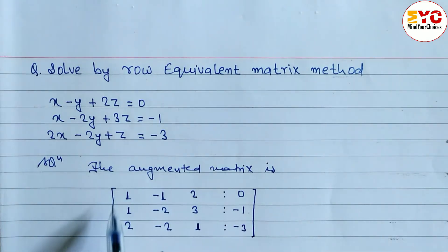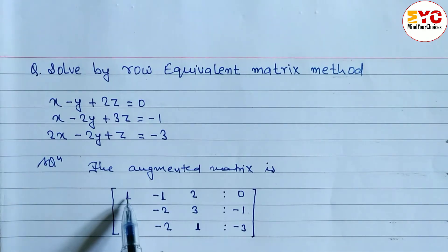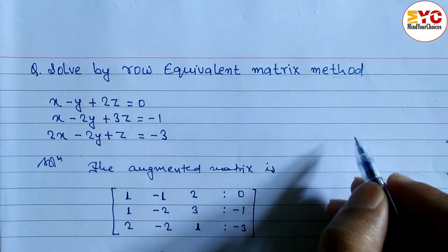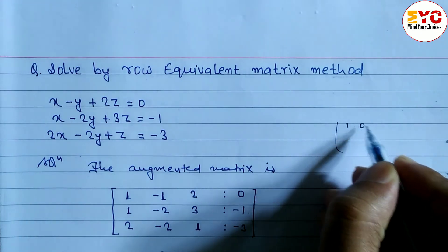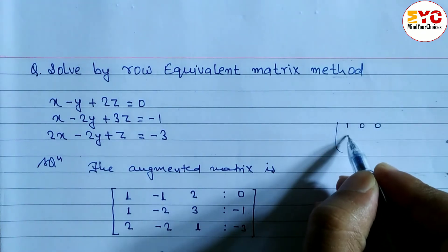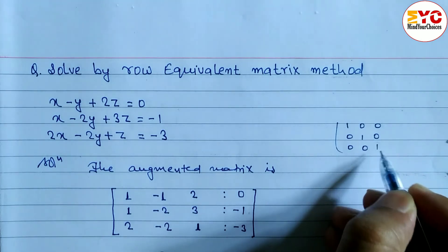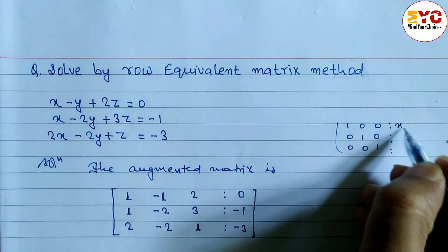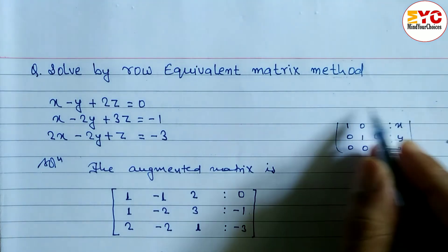We always have to convert this augmented matrix into the form of the identity matrix — that is, 1 0 0 / 0 1 0 / 0 0 1. The values on the right-hand side will then give us x, y, and z respectively.